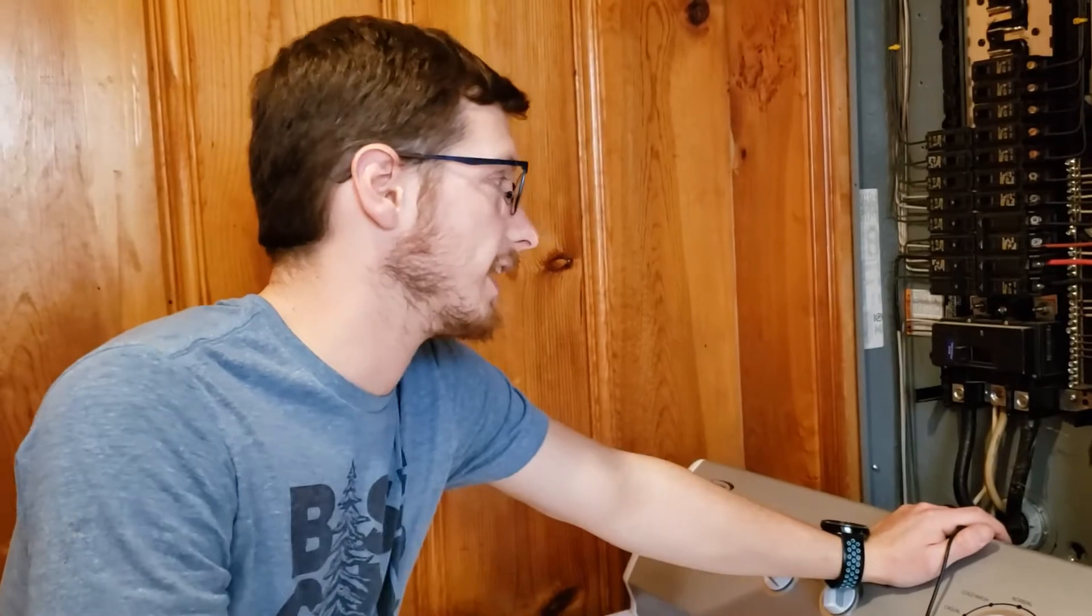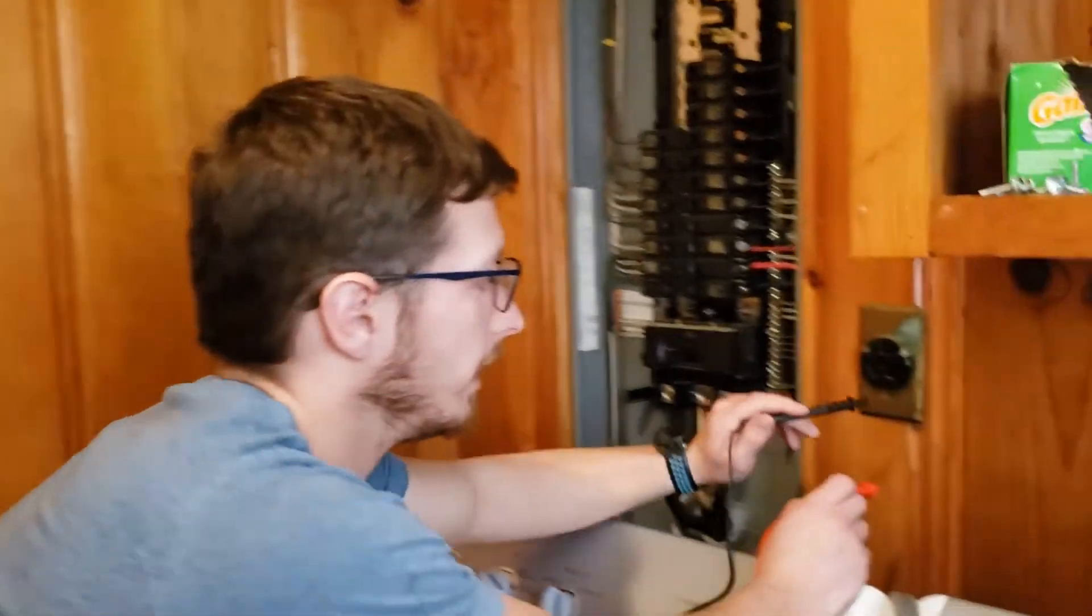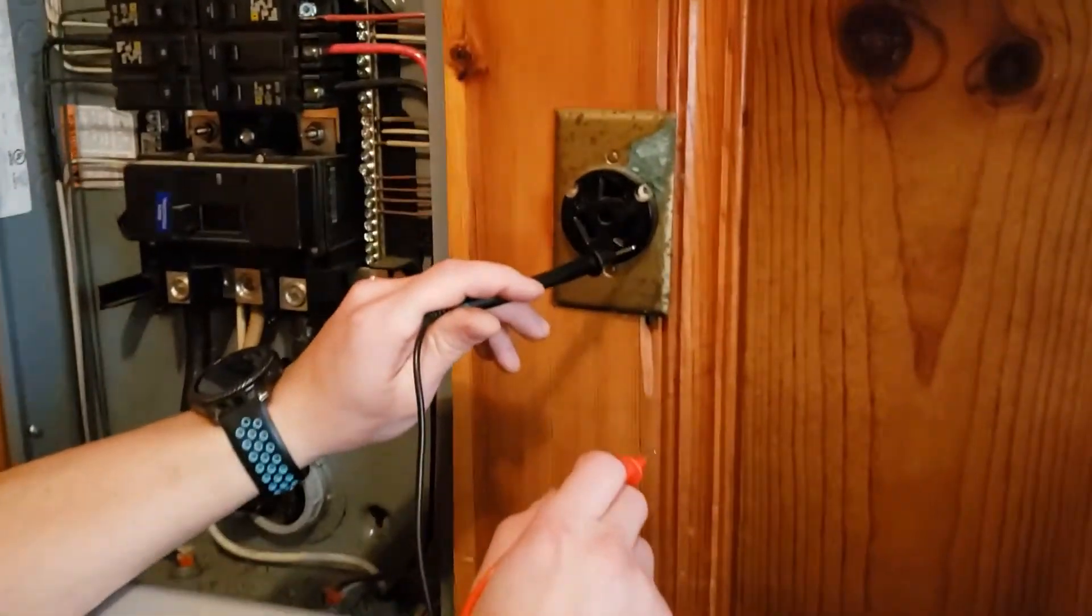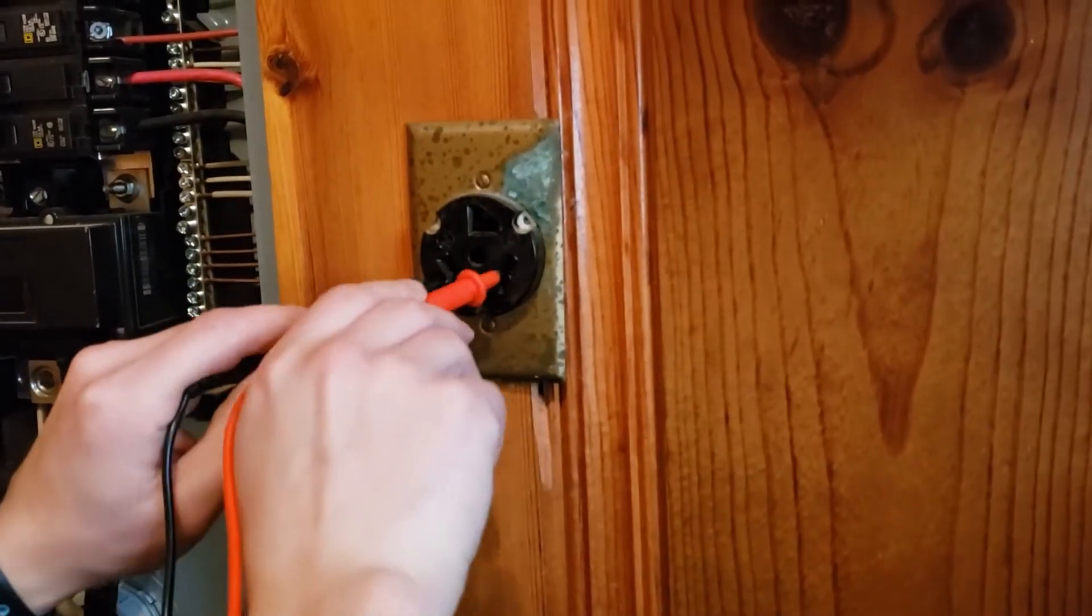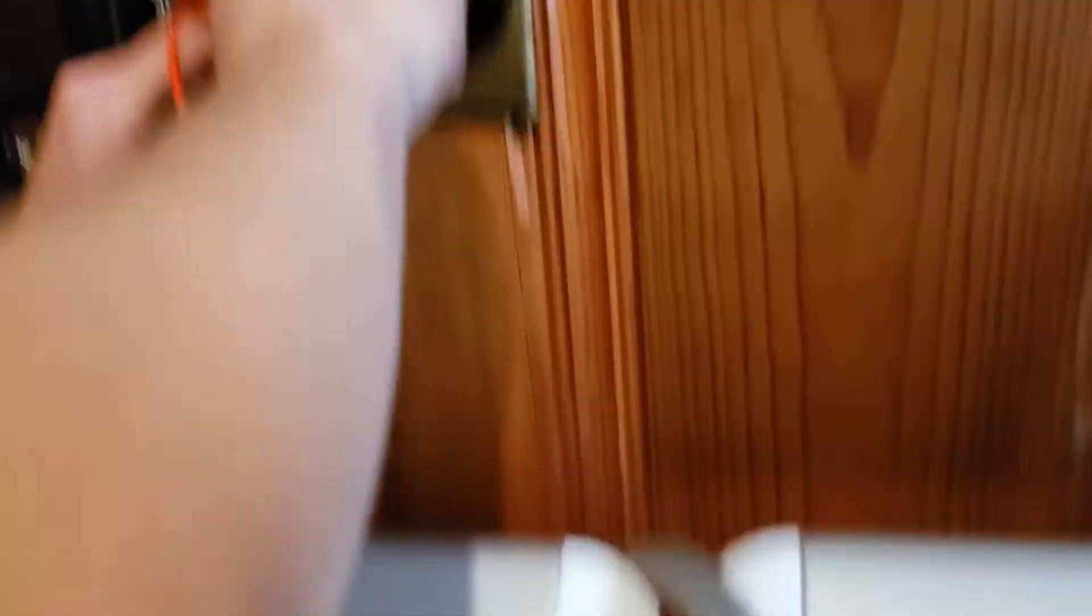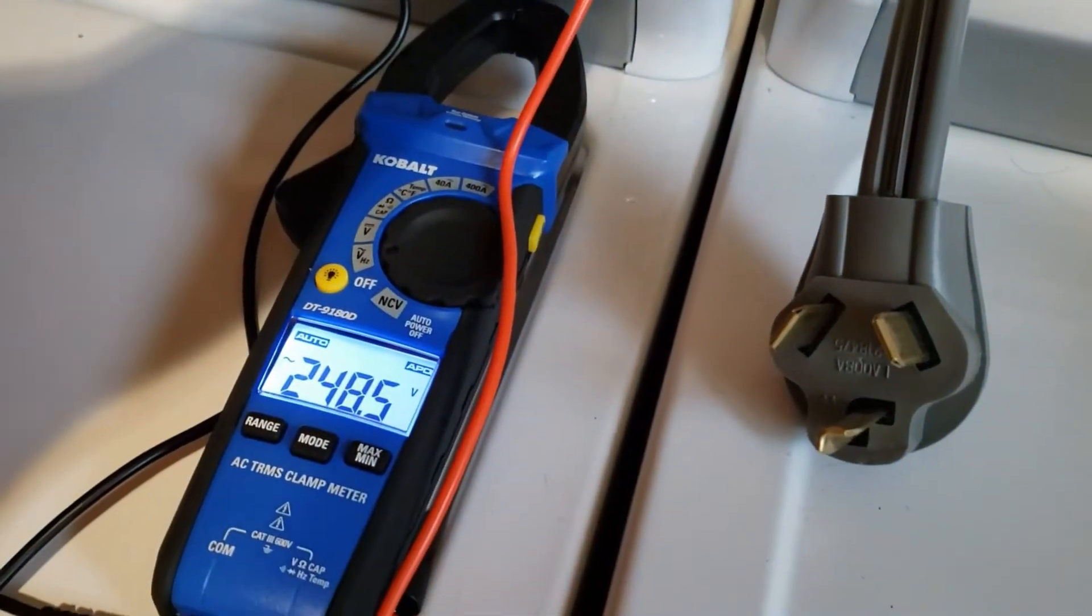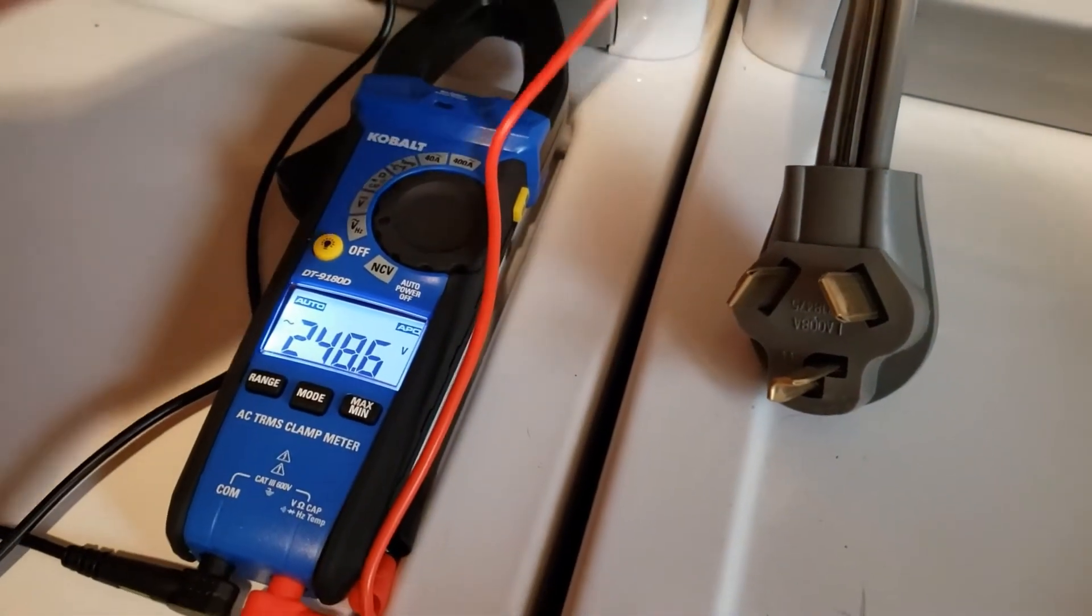With your standard electric dryer, if you come in here and look at this, you've got to have 240 volts between both of these legs. So if you take both of your testers here and you put them in there, what do you get? 248.5. So that means we're getting the right volts there.